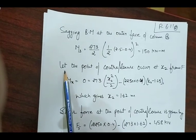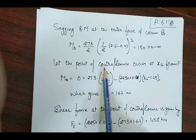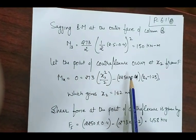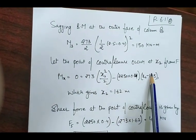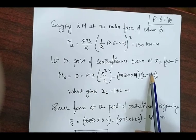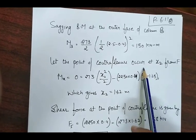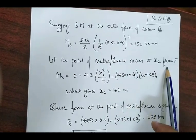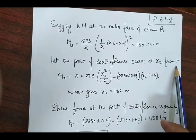After calculating the bending moments, we now find the point of contraflexure, which will occur at distance x2 from point F.